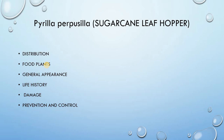Sometimes this pest is found on bhindi, karela and cauliflower, but these vegetables are not alternative host plants of Pyrella. General appearance, life history, damage, prevention and control will be discussed in the upcoming slides.